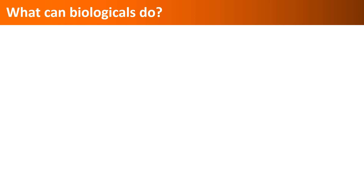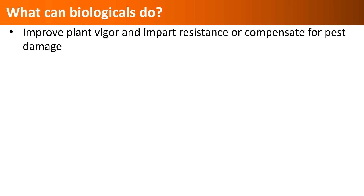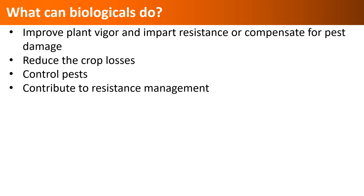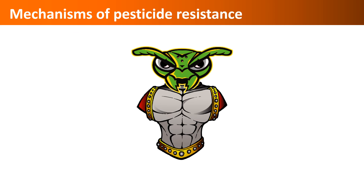So what can biologicals actually do? What we have learned is that they improve plant vigor, enable plants to resist stressors, or promote plant growth and yields to compensate for pest damage. They reduce crop losses and control pest populations. Through one or more mechanisms and use strategies, they contribute to insecticide or pesticide resistance management.